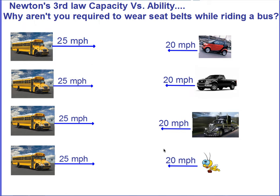Let's consider another example of Newton's third law: the idea of capacity versus ability. Why are you not required to wear a seatbelt while riding on a bus? We know that in the state of Michigan, at least, you're required to wear a seatbelt — but why do we not need to do that on a bus? Let's consider why that's the case by looking at four different scenarios in which a bus might collide with another object.